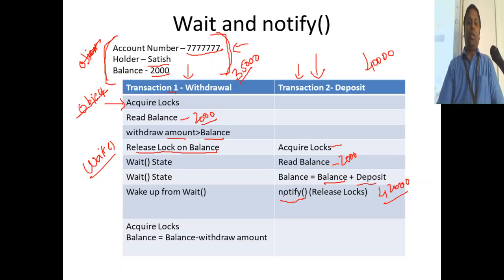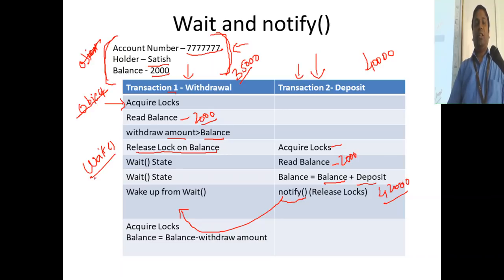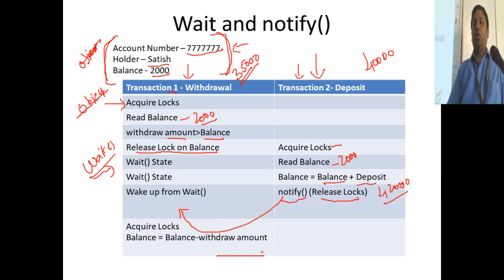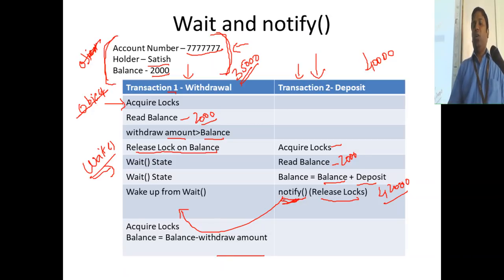Notify triggers any other thread that is in the wait state on this particular object. It wakes up that thread and releases the lock on the account. The waiting thread then checks: is 35,000 greater than 42,000? No. So it goes ahead and withdraws the amount, then releases the lock and terminates.